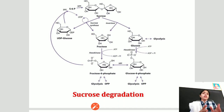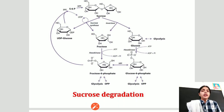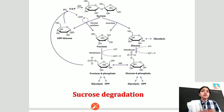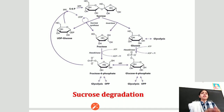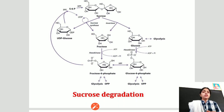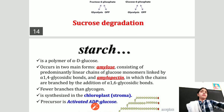Degradation of sucrose mostly occurs in the cytoplasm. It is degraded by the enzymes sucrose synthase and invertase. Sucrose is converted into UDP-glucose and then both enzymes together convert sucrose into one molecule of fructose and one molecule of glucose. This fructose and glucose is then converted into fructose 6-phosphate, which is utilized in the glycolytic pathway.